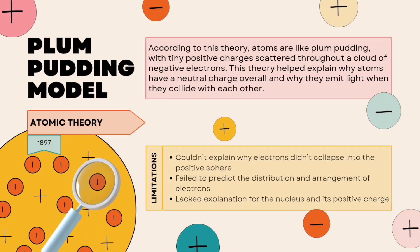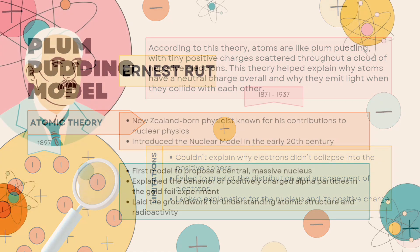According to the plum pudding model, atoms are like plum pudding with tiny positive charges scattered throughout a cloud of negative electrons. This theory helped explain why atoms have a neutral charge overall and why they emit light when they collide. Limitations include: it couldn't explain why electrons didn't collapse into the positive sphere, failed to predict the distribution and arrangement of electrons, and lacked explanation for the nucleus and its positive charge.